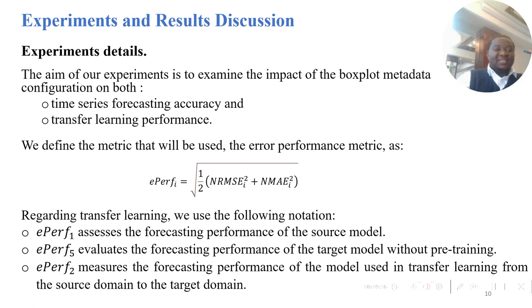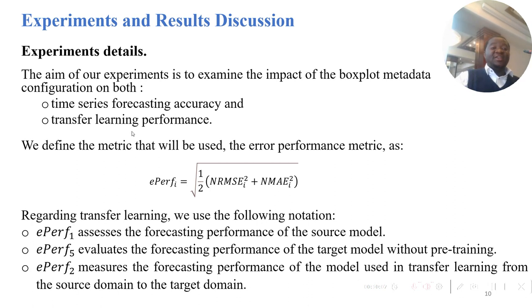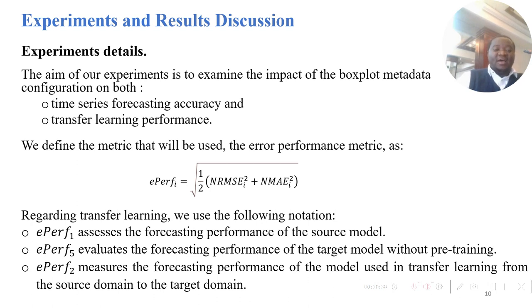Now, our experiment setup. The aim of these experiments is to compare the forecasting performance when we use the raw data versus when we convert the raw data into boxplot information metadata. That comparison is done on forecasting accuracy but also on transfer learning performance. We use a metric called ePerf — viewers are invited to consult our previous paper for more information. The ePerf is calculated as a quadratic mean of the RMSE and MAE in normalized format.